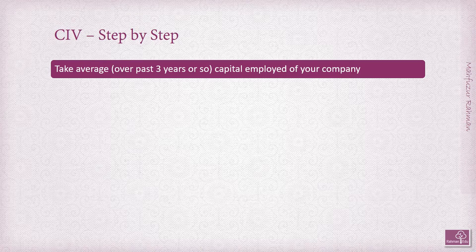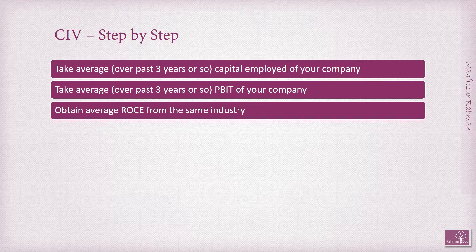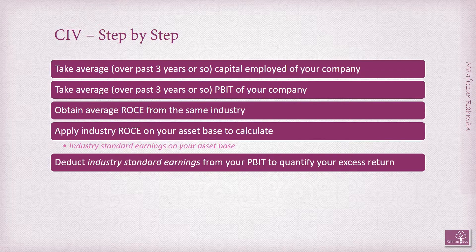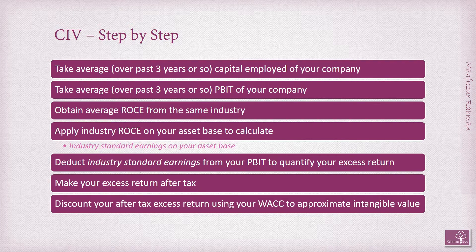Here is the detailed method used in practice. First, take the average capital employed of your company over the past three years or so. Then take the average PBIT over the same period. After that, obtain the industry average ROCE, then apply that industry ROCE to your asset base to calculate the industry-standard earnings. Deduct the industry-standard earnings from your PBIT to quantify your excess return. Next, make your excess return after tax. Finally, discount the after-tax excess return using your WACC back to present value to approximate your intangible value.